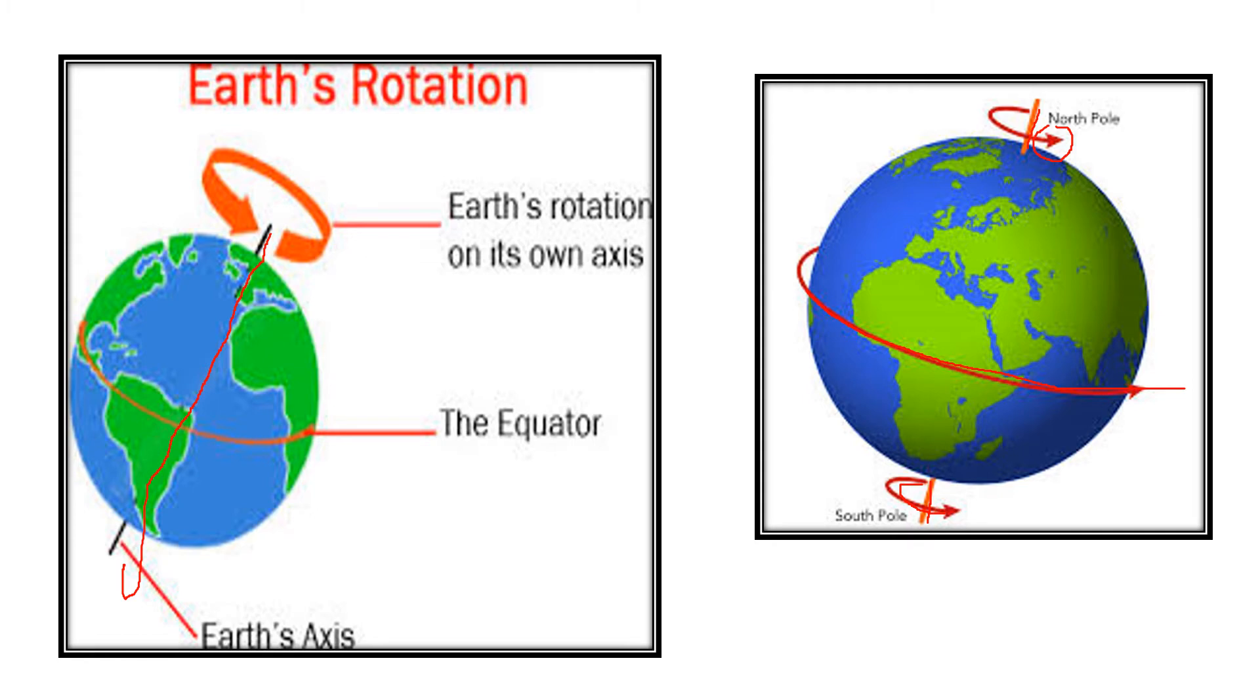And what is the degree at which it is tilted? It is 23.5 degrees. The Earth is tilted.